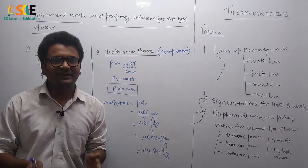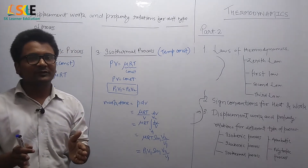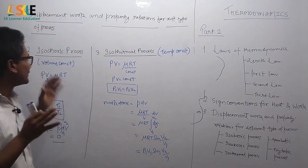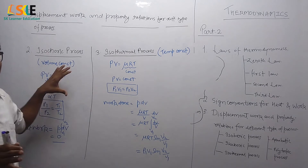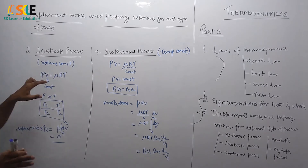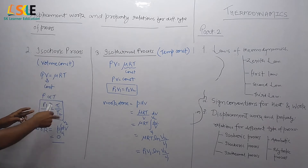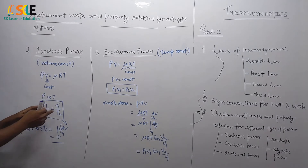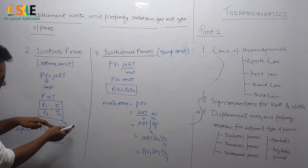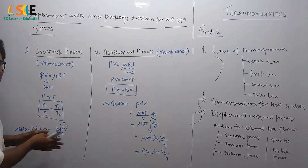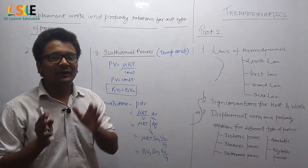Now we will see displacement work and property relations for the isochoric process. The isochoric process means volume is constant. From the ideal gas equation, if volume is constant, pressure is directly proportional to temperature, and the property relation is P1/P2 = T1/T2. When volume is constant, the work done is zero.